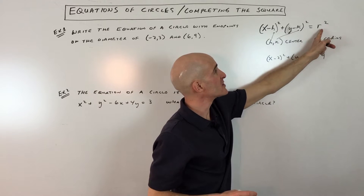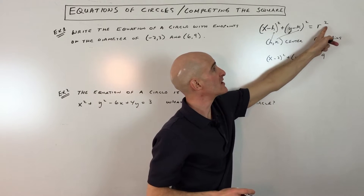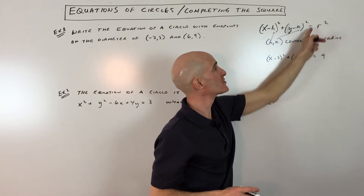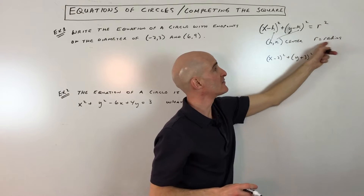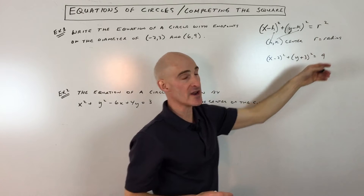Notice that this is the radius squared — you would have to take the square root of this quantity to find the actual radius.